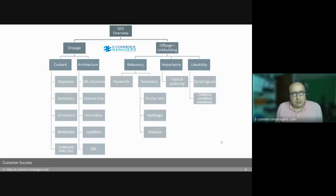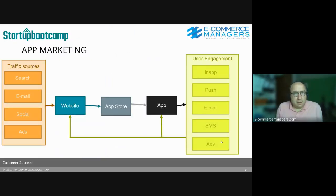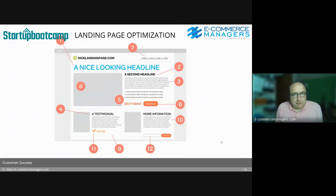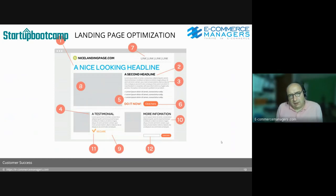SEO — on-page, off-page, link building, building authority and content. App marketing: we talked about landing page optimizations, reviews, value proposition, clear call to action, and copy can be a real game changer.